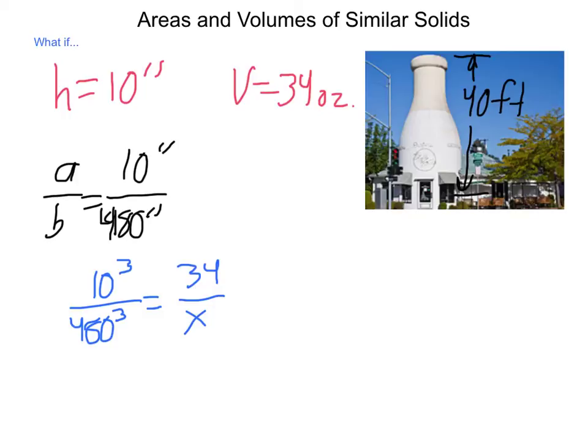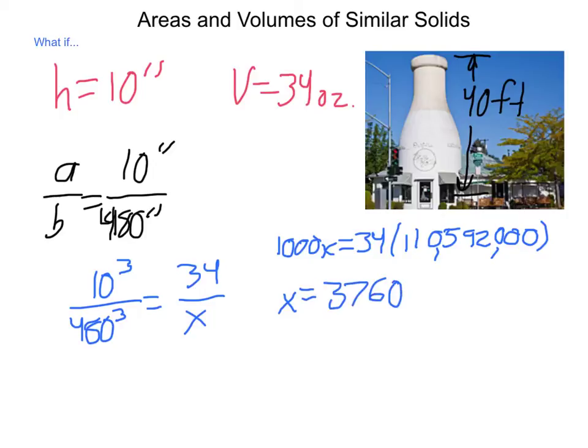Next, we need to project this up to volume. So our A cubed to B cubed would be 10 cubed over 480 cubed would have to equal 34 to an unknown volume of milk. Going through and multiplying these, we would come up with 1,000, which is 10 cubed, times X, that's the product of our extremes, equal to 34 times 110,592,000 cubic inches inside of the milk bottle. Multiplying that by 34 and then dividing by 1,000, we would come up with the restaurant or the ice cream shop having a capacity of 3,760,128 fluid ounces of milk. Now, just to give a comparison, a gallon is 128 fluid ounces, so that's about over 29,000 gallons of milk.